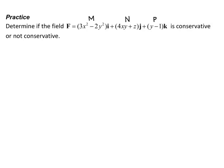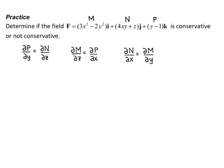My definition for telling whether my field is conservative is: partial p partial y equals partial n partial z; partial m partial z equals partial p partial x; and partial n partial x equals partial m partial y. So we will start with p, which is y minus 1. If I take the derivative of that with respect to y, I get 1. Now n is 4xy plus z. If I take the partial derivative of n with respect to z, I also get 1. Those two are equal, and so my first criteria is met.